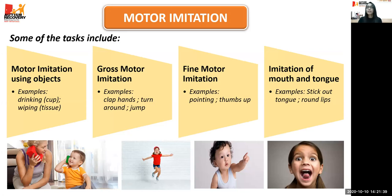Then comes gross motor imitation, which involves the larger muscles of arms and legs — examples include clap hands, turn around, and jump. Then fine motor imitation with smaller muscle movements like finger pointing or thumbs up. And then imitation of lip and mouth movements — examples include open mouth, stick out tongue, move the tongue side to side, round lips, or do a kissing action. It's good to do lip and mouth movement imitation in front of a mirror to make it more fun.